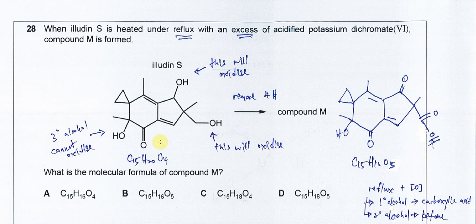For this structure, we know that this alcohol will be oxidized because it's secondary, and this alcohol also will be oxidized because it's primary. This alcohol cannot be oxidized because it's tertiary — this carbon has OH with three alkyl groups — so it's not going to oxidize and stays the same.